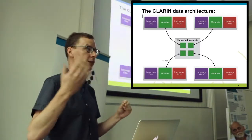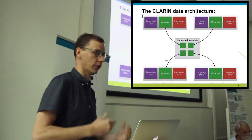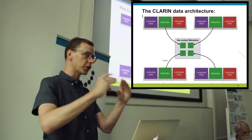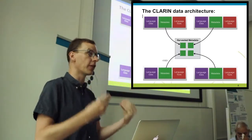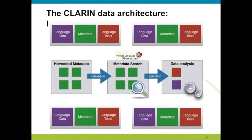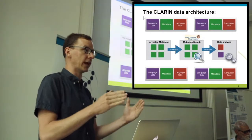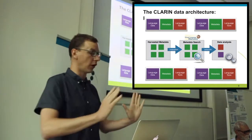Europeana is also providing metadata for its resources. The idea is that we have one good starting point where all data is registered through metadata. The next step is to index the metadata and make it searchable — if you are interested in 20th century Polish novels, it should be possible with one interface to find relevant data sets. This is possible through a search application called the Virtual Language Observatory.